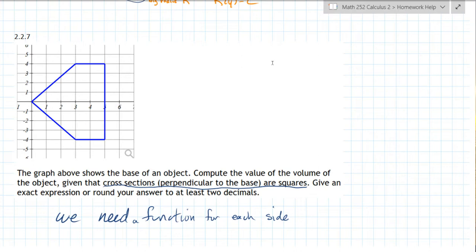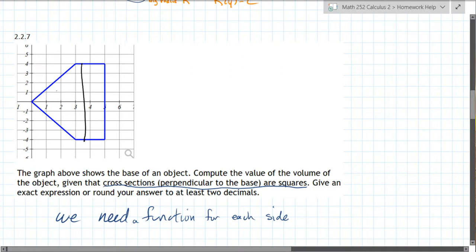And it says cross-sections perpendicular to the base are squares. Now, that could mean that the cross-sections look like this, that are squares like that, and then a cross-section over here would look like that.